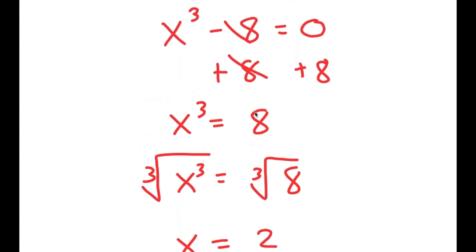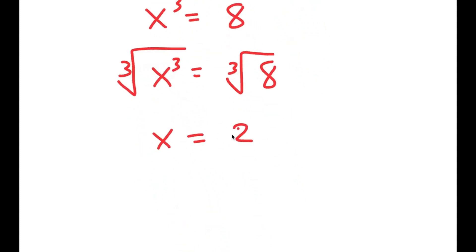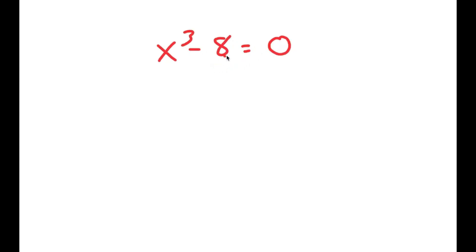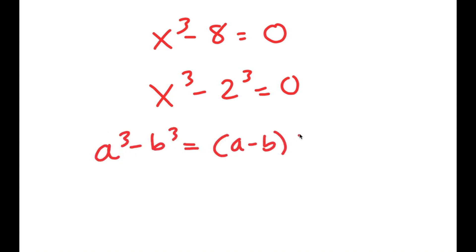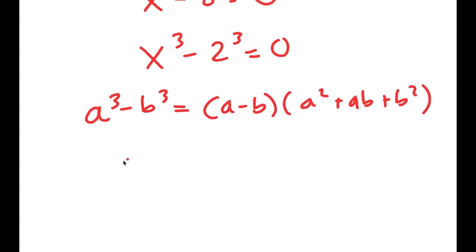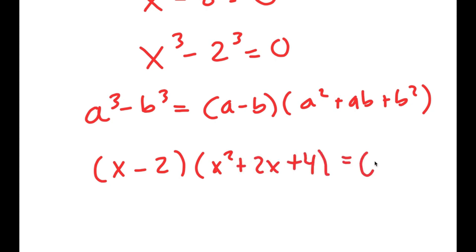But actually, there are more than one solution to this equation. So I'm going to rewrite x to the power of 3 minus 8 equals 0, and rewrite 8 as 2 to the power of 3. So I get x to the power of 3 minus 2 to the power of 3 equals 0. Now I'll use the difference of cubes formula: a³ minus b³ equals (a minus b)(a² plus ab plus b²). So this turns into x minus 2 times x squared plus 2x plus 4 is equal to 0.